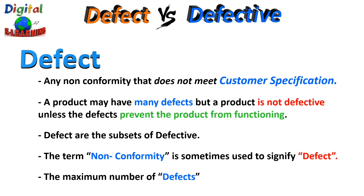The maximum number of defects allowed is based on AQL, which is set by the customer. AQL stands for Acceptable Quality Limit — that is the percentage defective which is accepted 90% of the time by the customer. For example, an AQL of 1.5 means no more than 1.5% defective items are allowed in a lot.